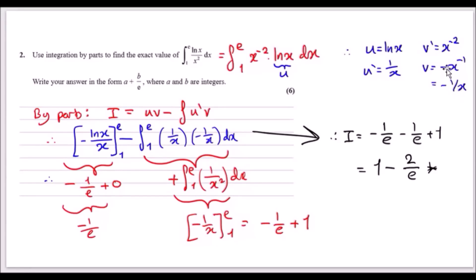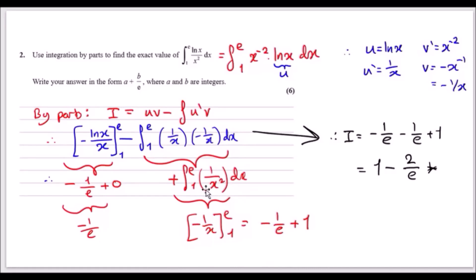Using the formula: uv gives ln(x) × (−1/x), which can be written in simplified form, evaluated from 1 to e. Then minus the integral of u′v, where u′ = 1/x and v = −1/x, which simplifies to a positive 1/x². Now evaluate each segment: plugging in e gives ln(e) = 1, so −1/e. Plugging in 1 gives ln(1) = 0, so that term cancels to zero.